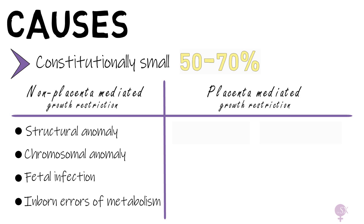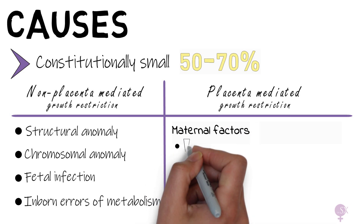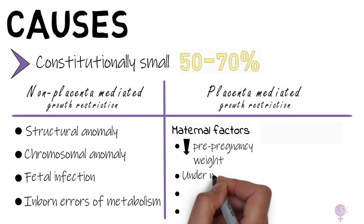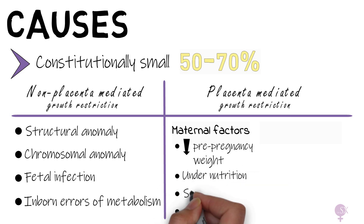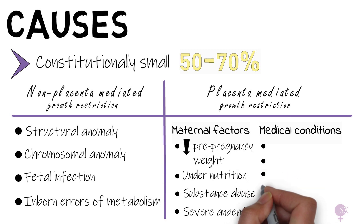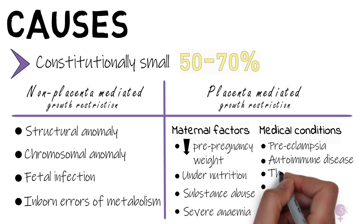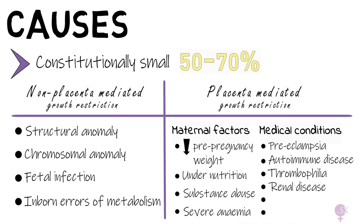Multiple factors may be predisposing to this condition, such as maternal factors including low pre-pregnancy weight, under-nutrition, substance abuse, and severe anemia. Medical conditions can also affect the placenta, such as preeclampsia, autoimmune disease, thrombophilia, renal disease, diabetes, and essential hypertension. We should be thinking about all of these possible causes when faced with a growth scan showing a small for gestational age baby.